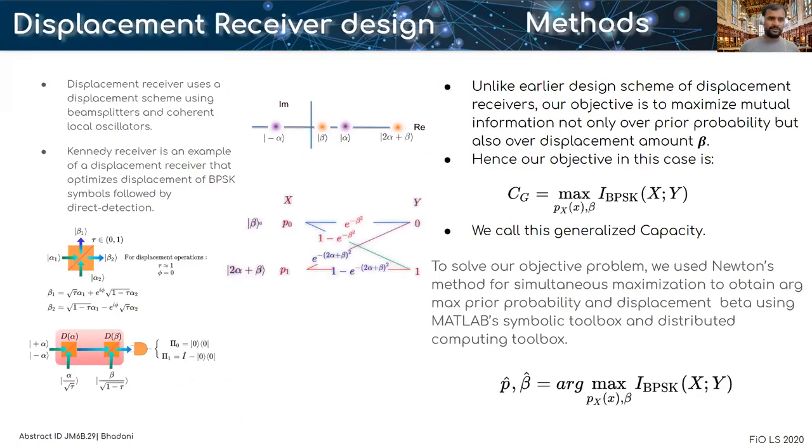The displacement receiver uses a displacement scheme using beam splitters and a coherent local oscillator. Kennedy receiver is an example of a displacement receiver that optimizes displacement of BPSK symbols followed by direct detection.